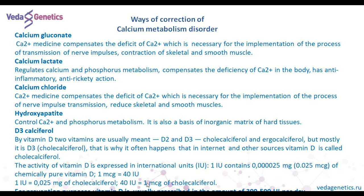Calcium chloride compensates the deficit of calcium necessary for the implementation of nerve impulse transmission and contraction of skeletal and smooth muscles. Hydroxyapatite controls calcium and phosphorus metabolism and is also the basic component of the inorganic matrix of bone tissues. The last way to correct calcium metabolism disorder is to take calcitriol (active vitamin D3).